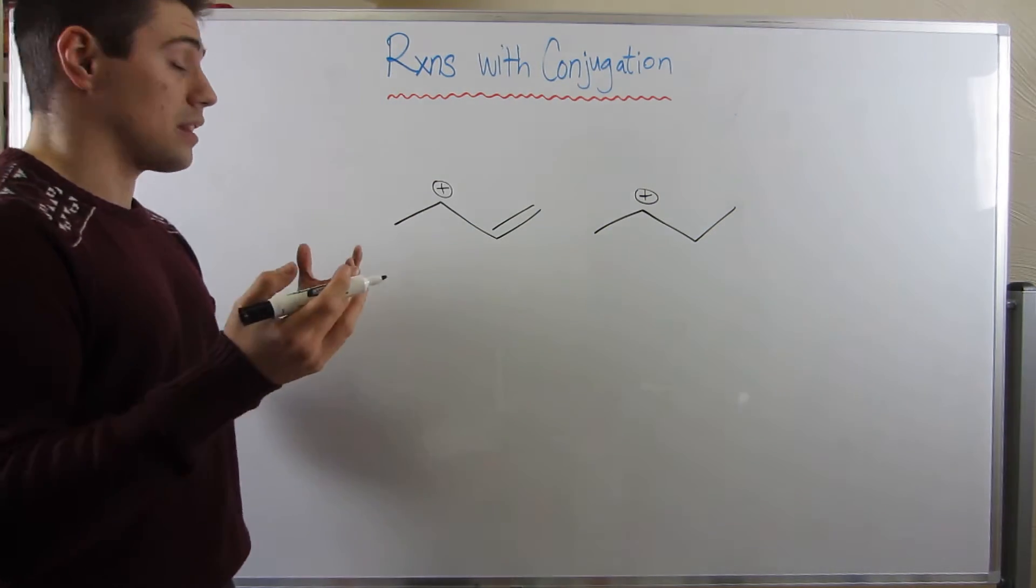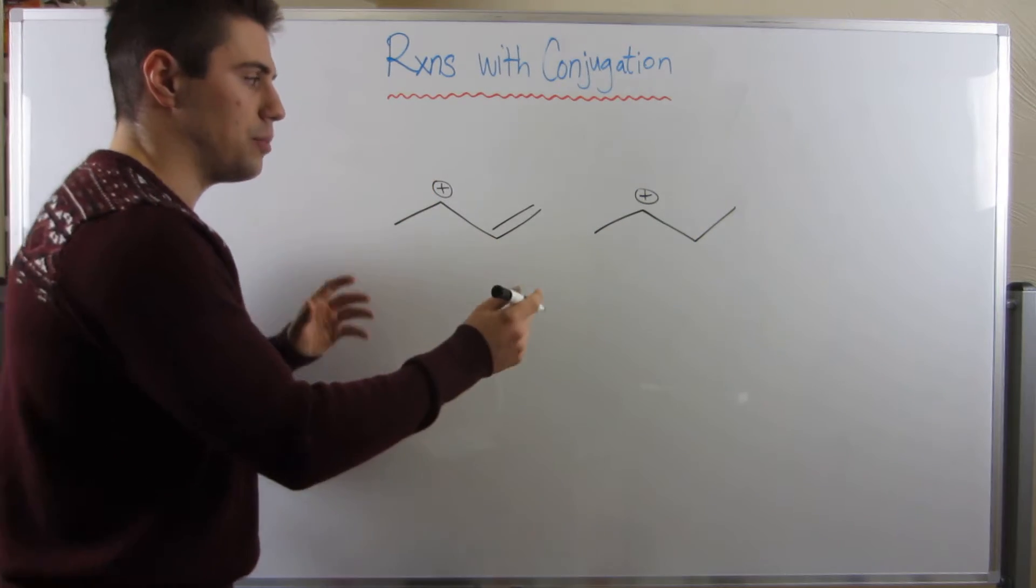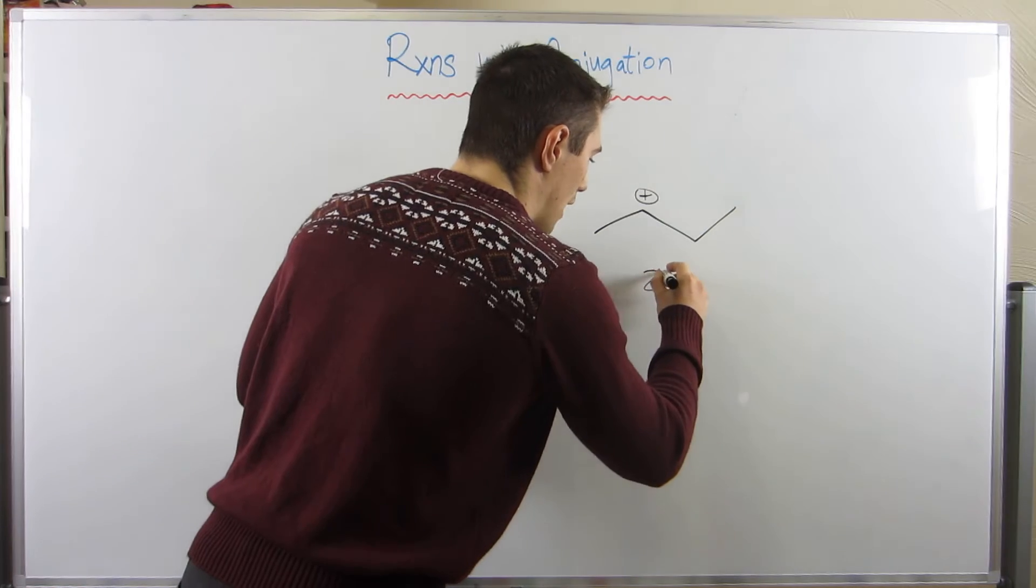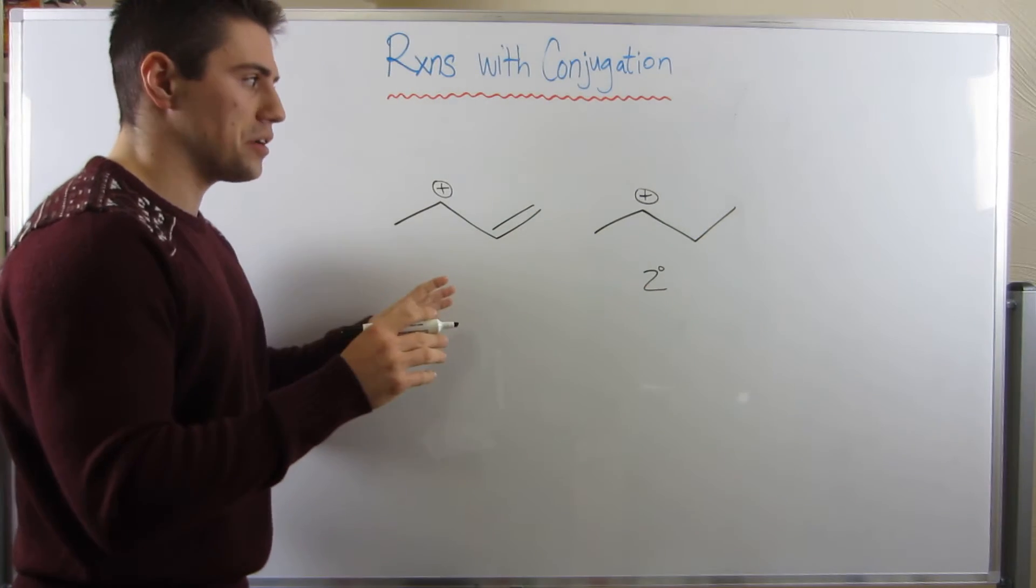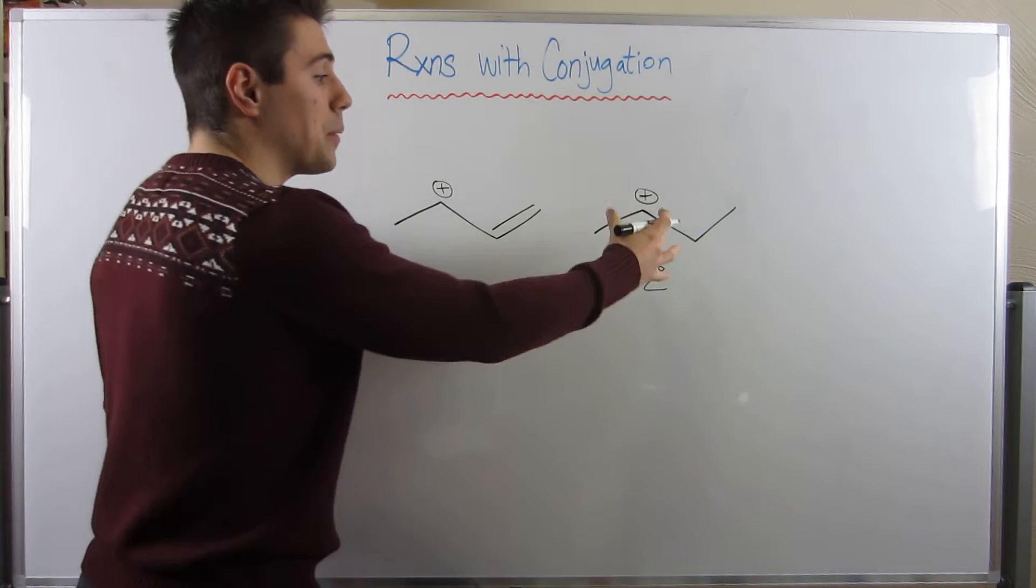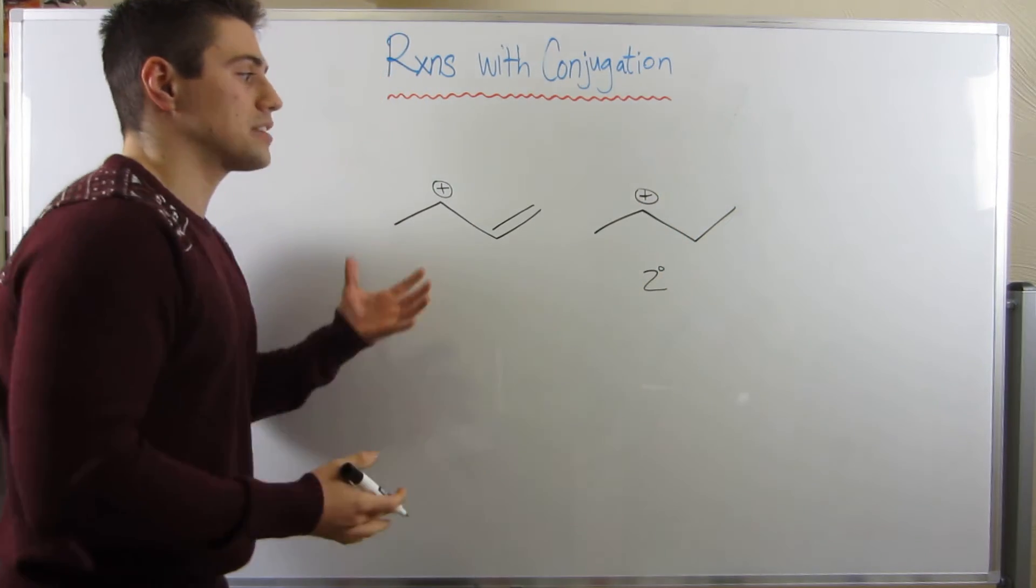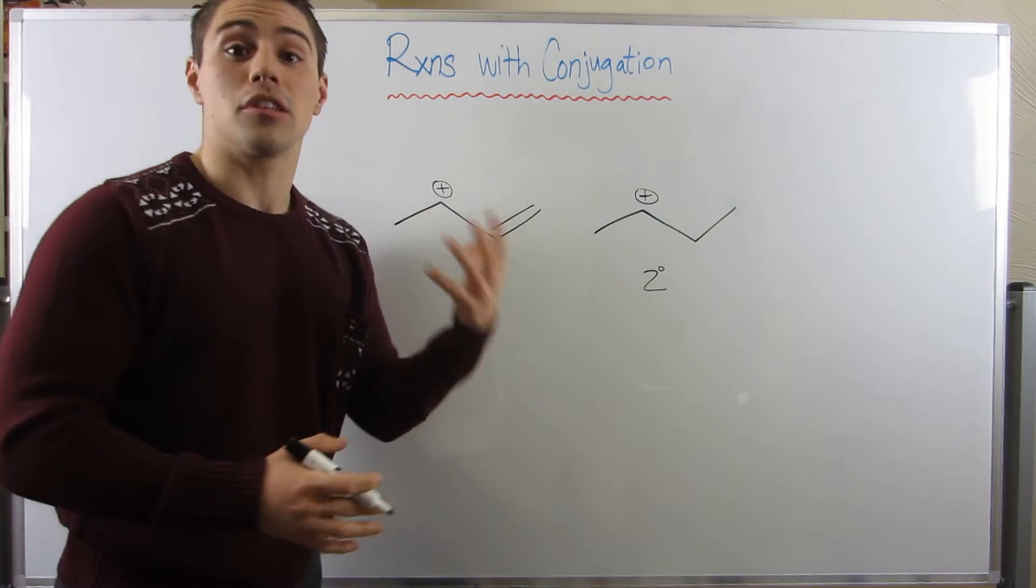Based on what we've done in the last worksheet, I hope there's a little light bulb going off in your head. So let's just talk about both. This is a secondary carbocation, right? Just a secondary carbocation, nothing special. We know that there's some hyperconjugation going on around here, some type of stabilizing effect to keeping him a little happy.